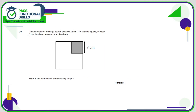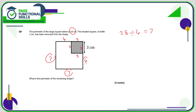Question 9: the square has a perimeter of 28. Since all sides of a square are equal, each side is 28 divided by 4, which is 7. There's also a smaller square, which is 3 by 3 by 3 by 3. So if the big square is 7, the remaining length is 4. The perimeter of the overall shape — 7 plus 7 plus 4 plus 3 plus 3 plus 3 plus 4 — is still 28 centimetres.